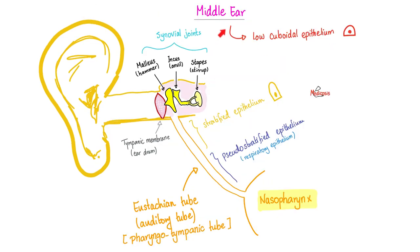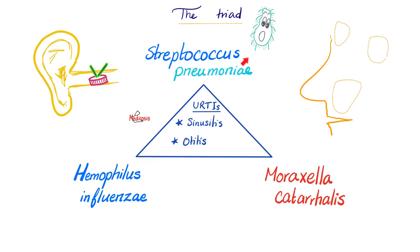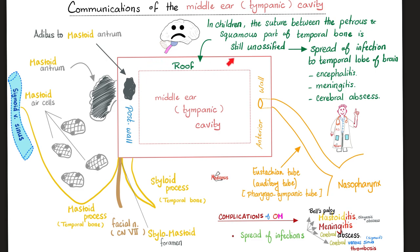We talked about otitis media before, which was inflammation of the middle ear, usually caused by Streptococcus pneumoniae, Haemophilus influenzae, or Moraxella catarrhalis. Infection of the middle ear is kind of dangerous because it can spread everywhere. It can spread upstairs to the brain, especially in young children, because the sutures between the petrous part of the temporal bone and the squamous part of the temporal bone are still unossified, making it easier for infection to spread to the brain.